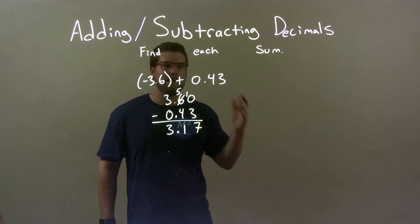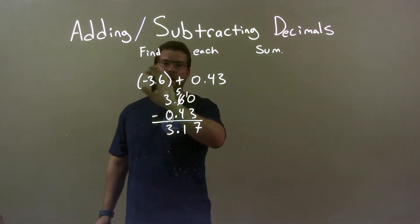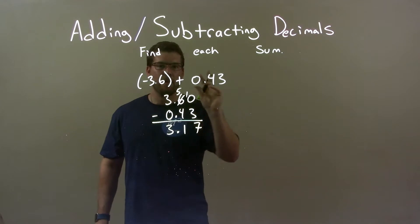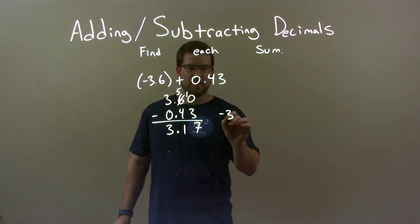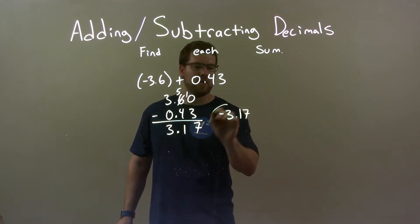So now I have 3.17, but what I said was our final answer has to be negative, because that was more negative than 0.43 is positive. So we slap on a negative there, and our final answer is negative 3.17.